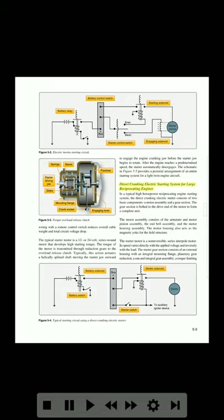Direct cranking electric starting system for large reciprocating engines. In a typical high horsepower reciprocating engine starting system, the direct cranking electric starter consists of two basic components: a motor assembly and a gear section. The gear section is bolted to the drive end of the motor to form a complete unit. The motor assembly consists of the armature and motor pinion assembly, the end bell assembly, and the motor housing assembly. The motor housing also acts as the magnetic yoke for the field structure. The starter motor is a non-reversible series interpole motor. Its speed varies directly with the applied voltage and inversely with the load.